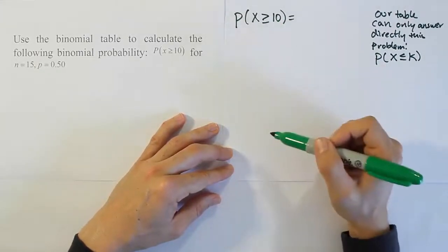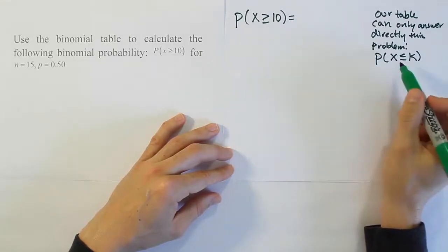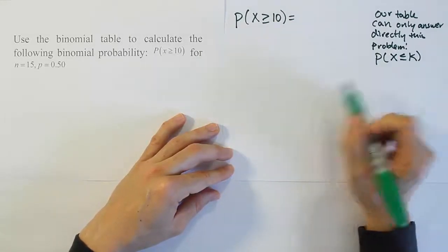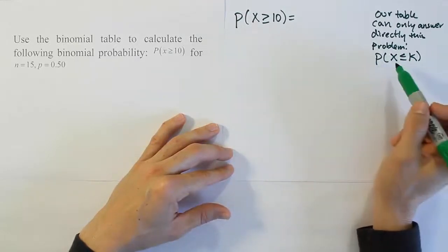So it can't do greater than or equal to directly. It can't do less than, it can't do greater than directly. It can only do less than or equal to. So let's talk about the different ways that you will solve this problem under different scenarios.